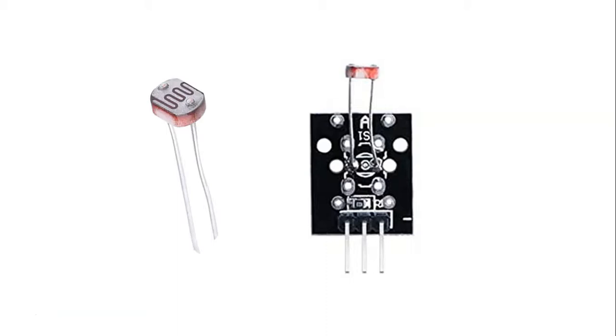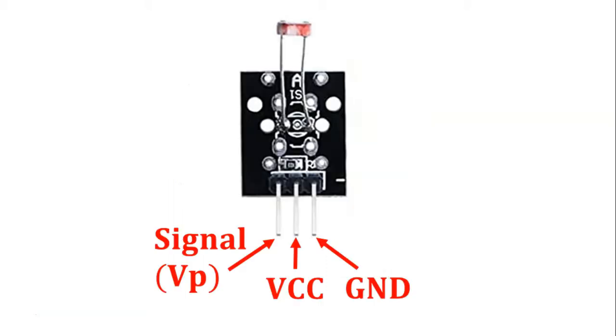We also have the module which is what's shown on the right, which has the LDR component built into a printed circuit board which also has a resistor built into it and then the three pins for ease of use. Now the three pins are signal, or let's call it VP as voltage probe, which is where we take our main value or reading, and then we have VCC and ground to provide the positive and negative voltage to power the sensor.